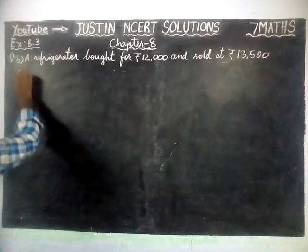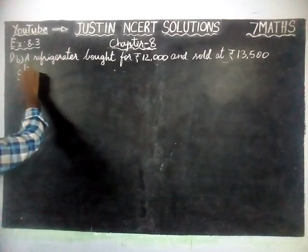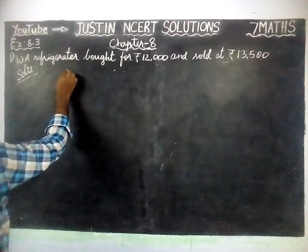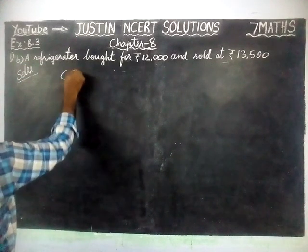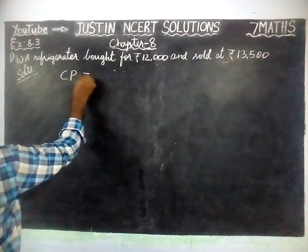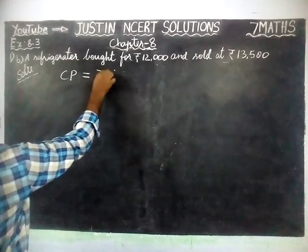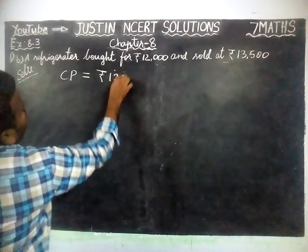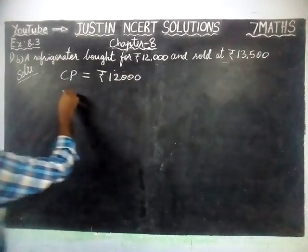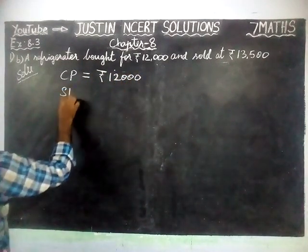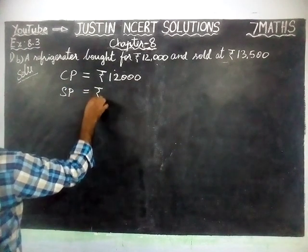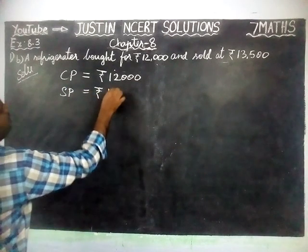Now we will write the given information. Given: cost price is equal to Rs. 12,000. Next, sale price is equal to Rs. 13,500.